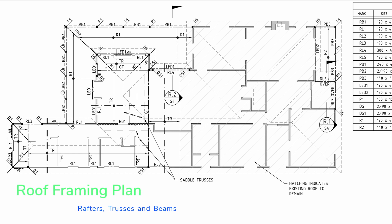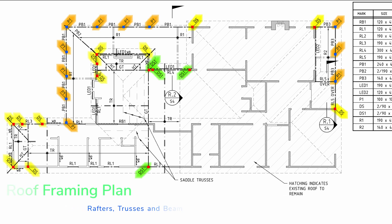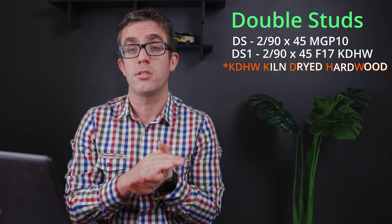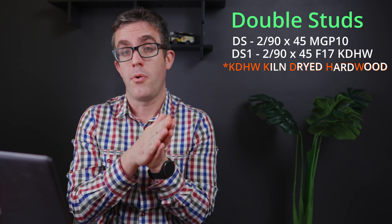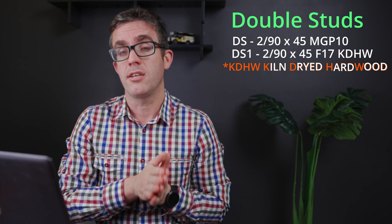We can also see that we've got additional DS notations on our drawings, as well as P1 notations. DS stands for double stud — so for whatever reason you've got additional load in that location, you've got an additional point load that you need to deal with through a double stud. P1 is typically noted as a post; as it's on an external edge with no framing around it, it's just there to support the roof structure above.